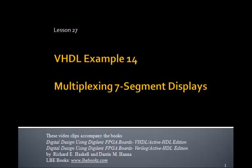This is Lesson 27, VHDL Example 14. You remember in the last example we saw how to turn on individual digits of the four seven-segment displays. The question was how could we display different numbers like 1, 2, 3, 4 on the seven-segment display. And as you might have guessed, to do that we have to multiplex the seven-segment displays.